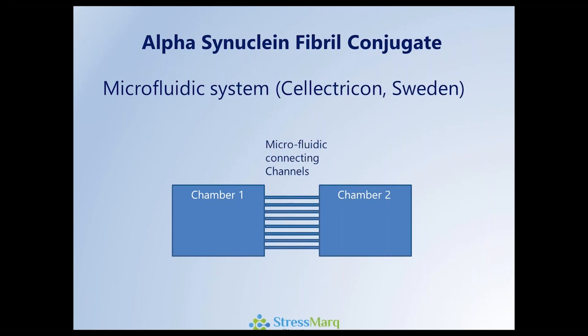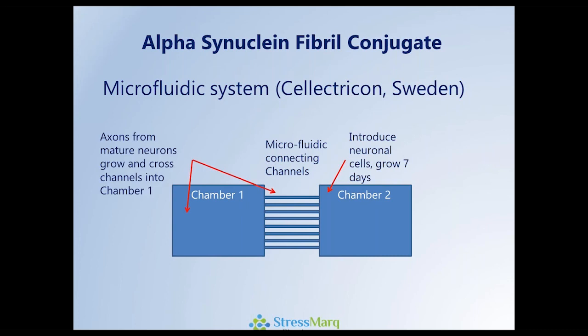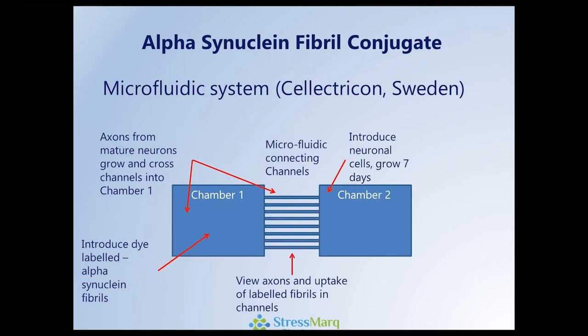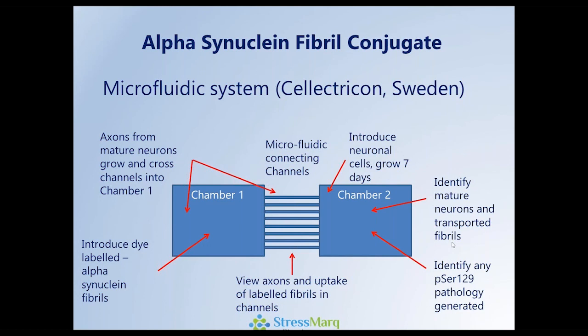Finally, we want to look at some of the conjugates, and this is work done by Selectricon in Sweden using a microfluidic system. This is within the framework of a 384-well plate where each well represents one chamber. You can see two chambers joined by short channels. In chamber two, cells are introduced and grown for seven days. These then grow across those channels and into chamber one where alpha-synuclein fibrils — which are dual-labeled so that we can see them — are directly introduced. We then look for uptake and transport across the neurons back into the neuronal cell bodies.